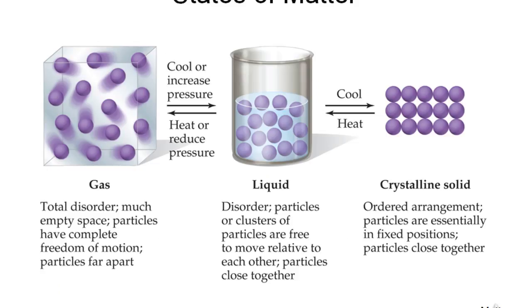The states of matter — we know the three common states: gas, liquid, and solid. Let's look at the properties of each. When we say gas, there is total disorder. The atoms or molecules can just move around in any way they want; there is no order of arrangement. Particles have freedom of motion — they move around in whatever space is available to them.